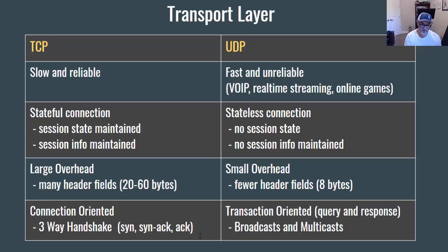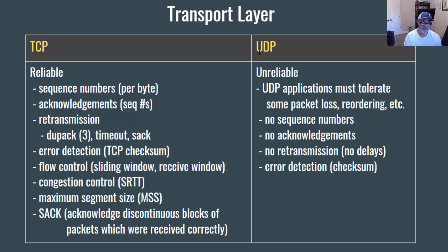In contrast, UDP is transaction-oriented. It's a simple query and response protocol that doesn't require an initial three-way handshake. UDP can be used for broadcasts and multicasts — a UDP broadcast can be sent to many clients without having to set up a connection for each one. One of the big differences between TCP and UDP is that TCP is reliable and UDP is unreliable.